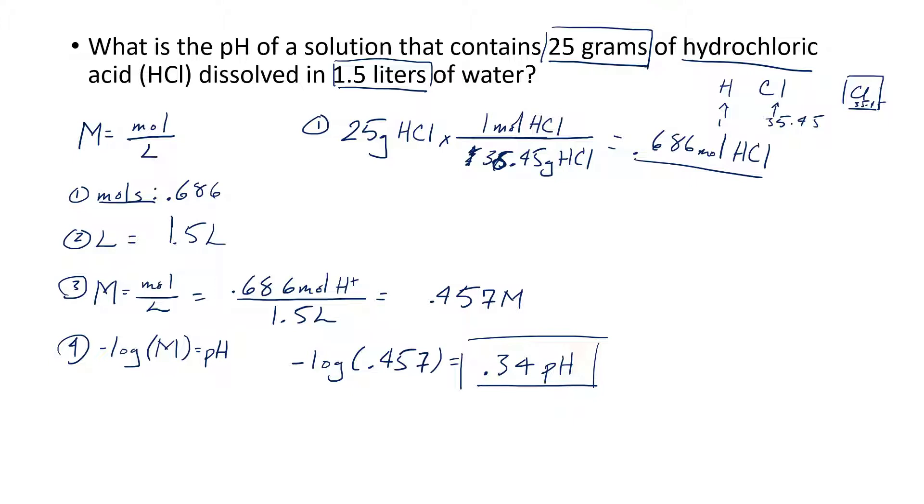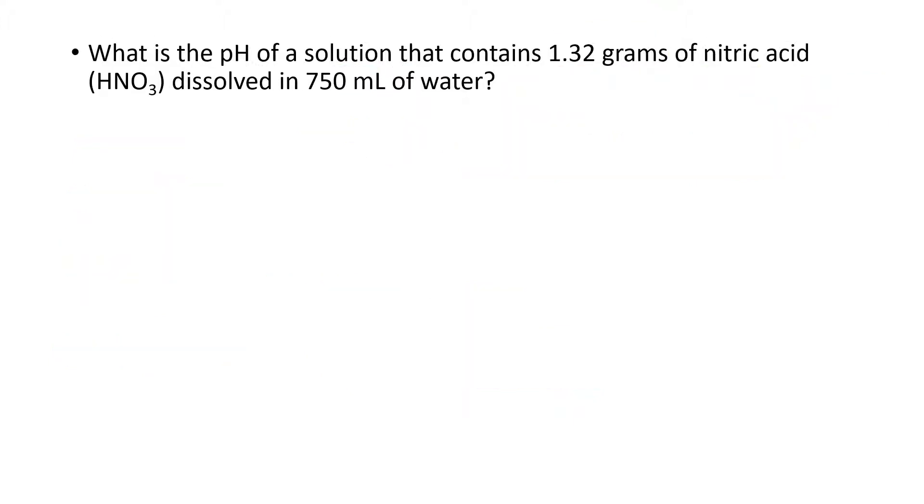Let's do one more. It wants the pH of a solution that contains 1.32 grams of nitric acid and 750 mL of water. Again, we need the moles, we got to find the volume in liters, and then if we can find the molarity, that's awesome because then all we got to do is the negative log of that molarity, and then we can find the pH.